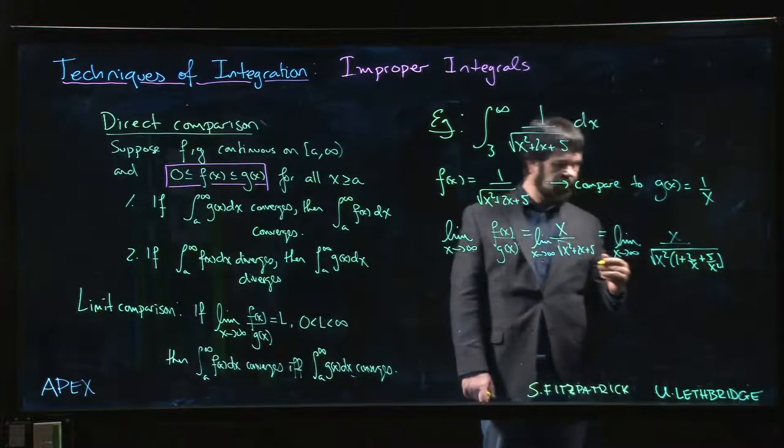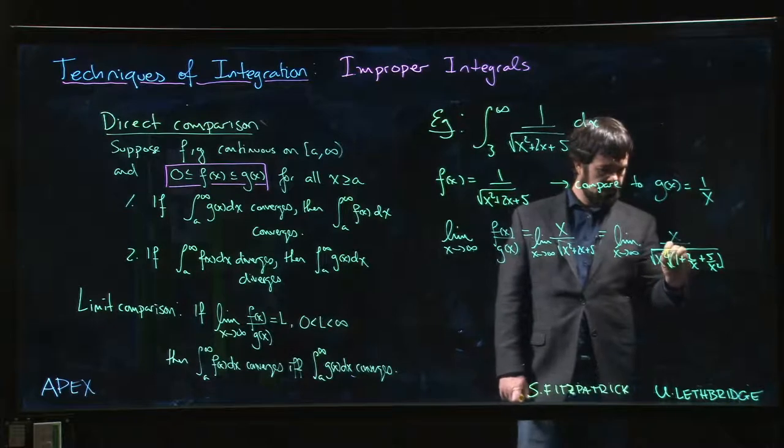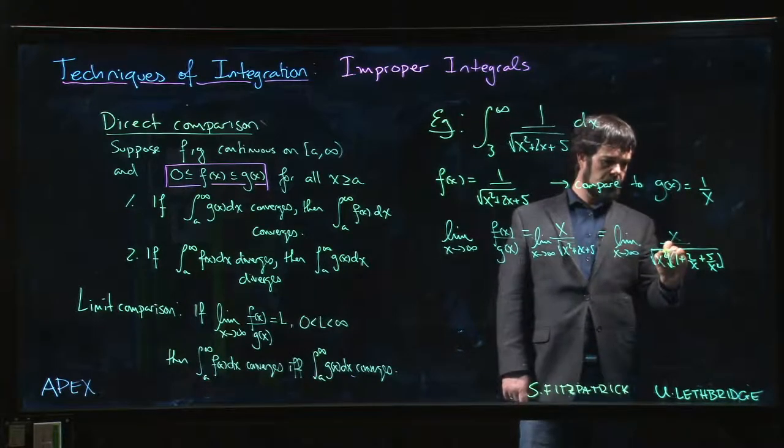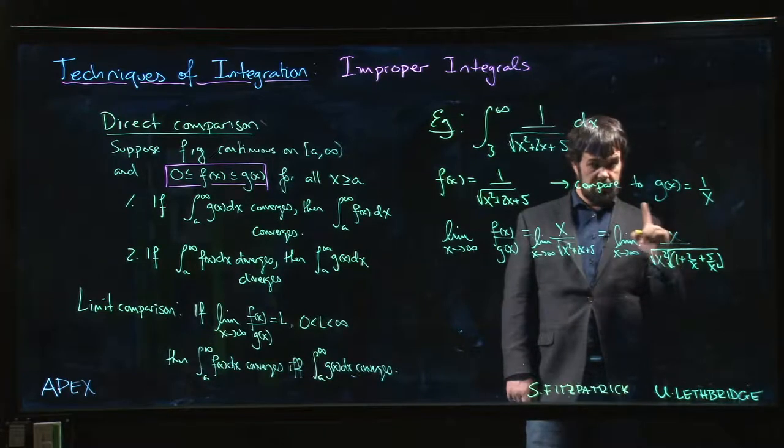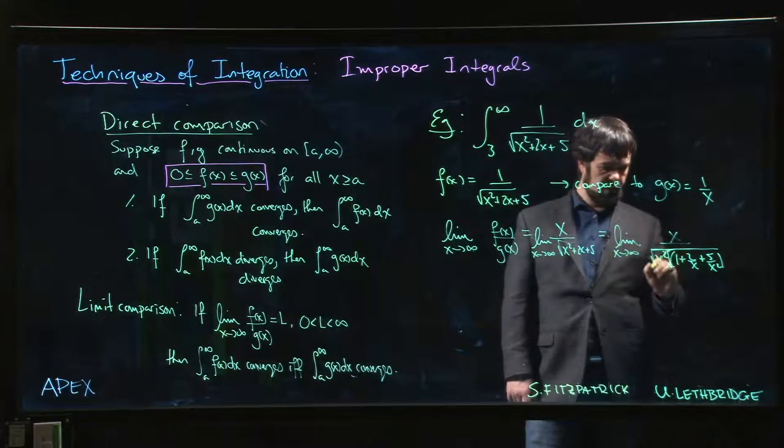...times the square root of all the rest. And square root of X squared is equal to X when X is positive, so I can cancel those. And then I just have 1 on top, and of course the bottom is going to go to 1...